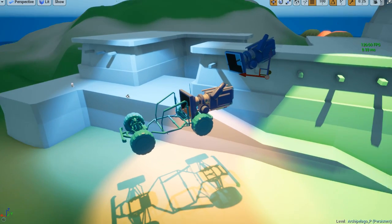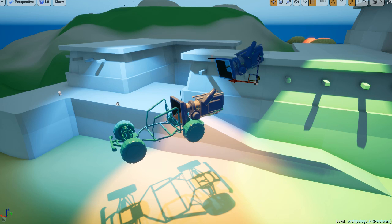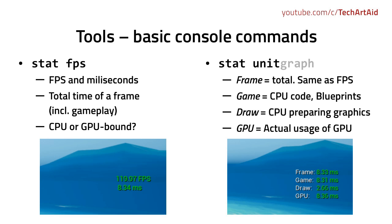StatFPS shows us both the final number of FPS achieved and the time it takes to render a frame — the total time. But we don't know yet if the cost is caused by the CPU or the GPU, because one will have to wait for the other. The GPU will have to wait for the CPU if the CPU needs more time to finish the frame — the gameplay code, drawing code, and stuff. So by using statUnit or statUnitGraph we can divide this information into four specific parts.